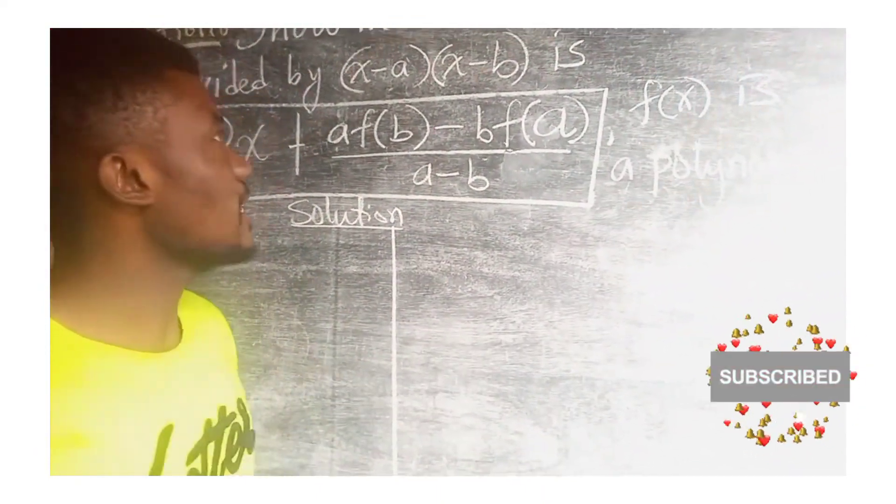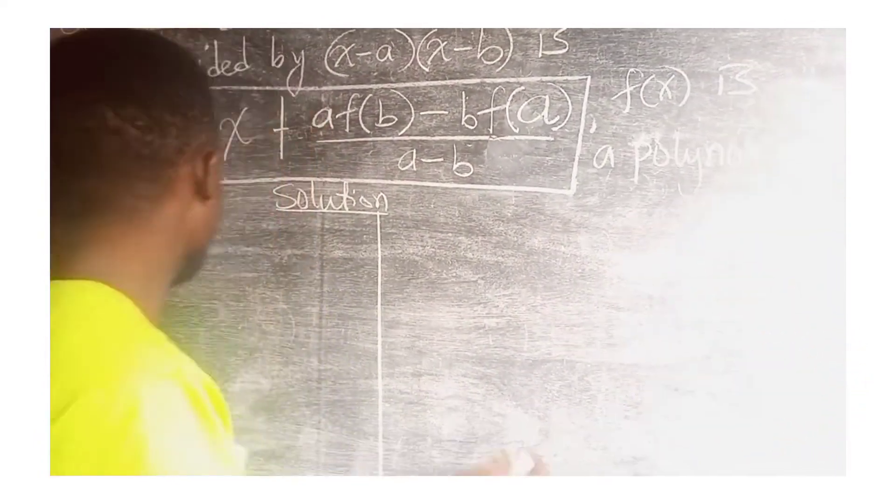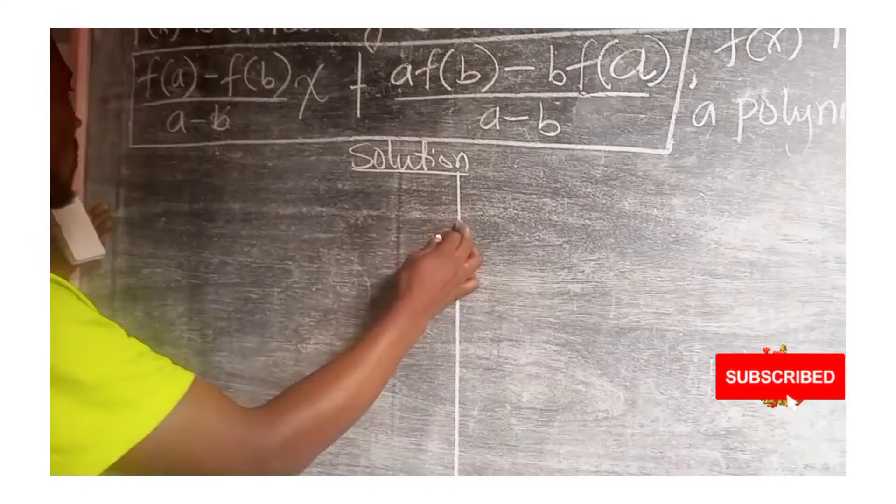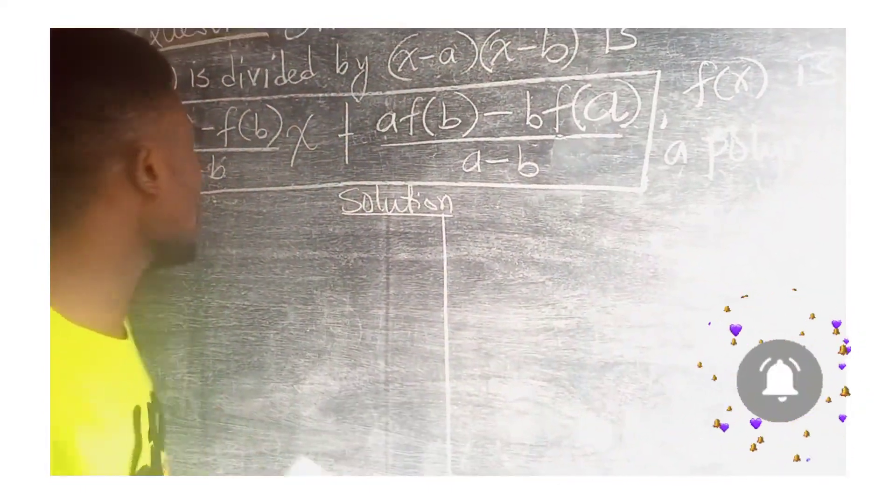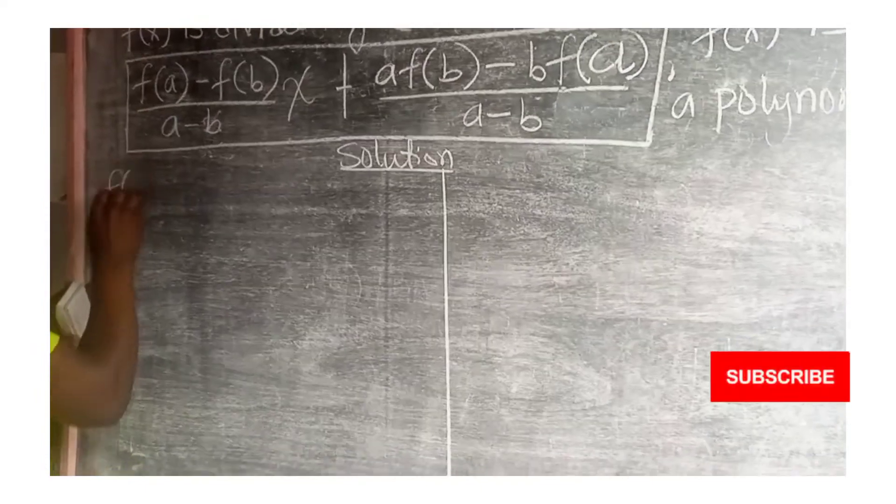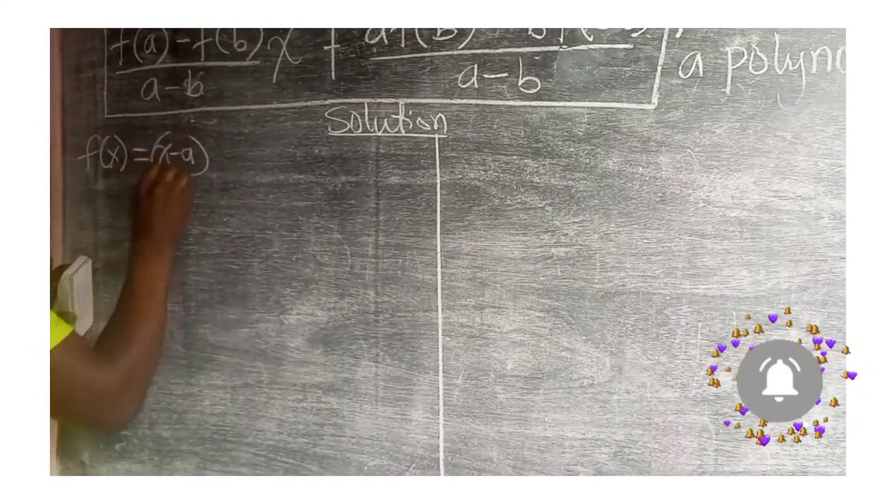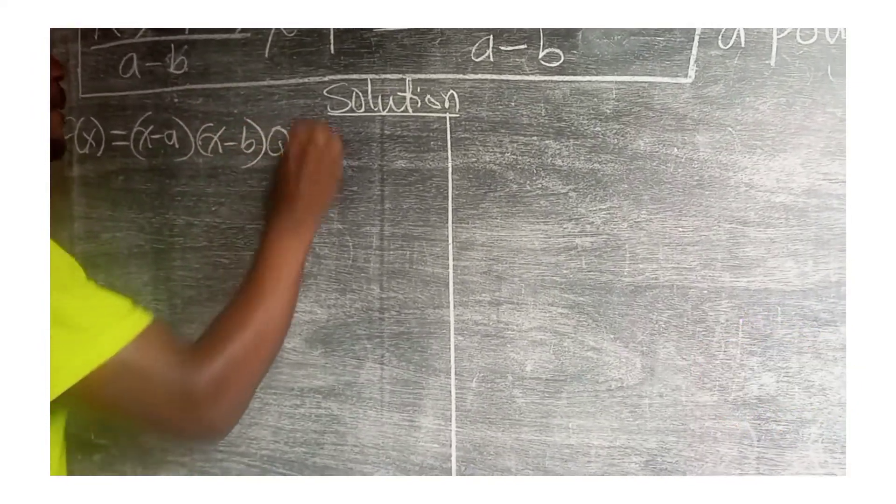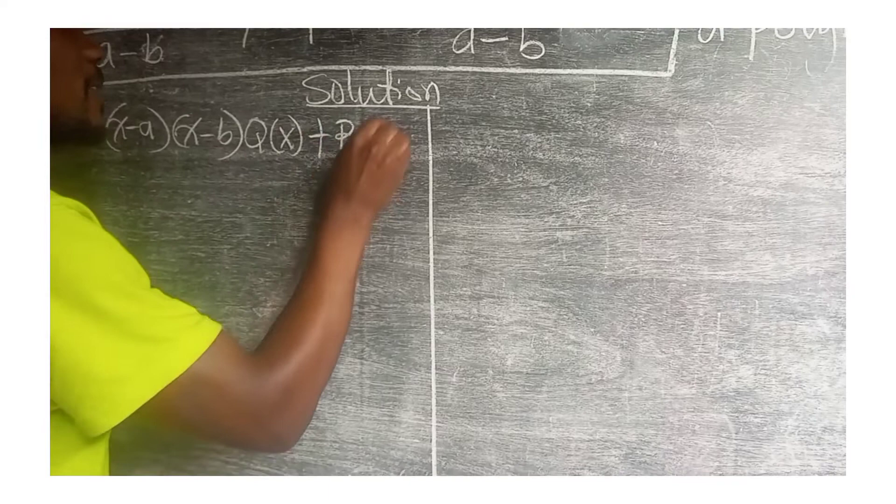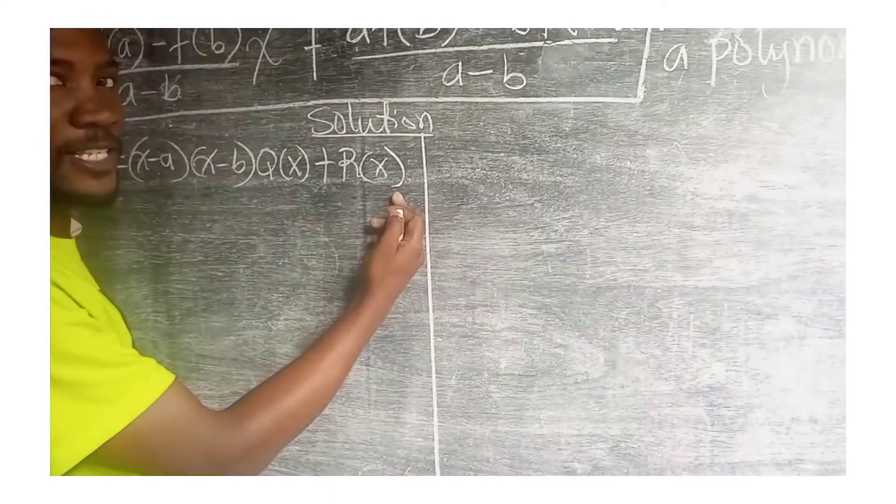Now, how do we prove this? We use our knowledge in polynomials. To do so, we first of all use the division algorithm to express f(x) as (x-a), that is the divisor, times a quotient, plus the remainder. This is the division algorithm for f(x).